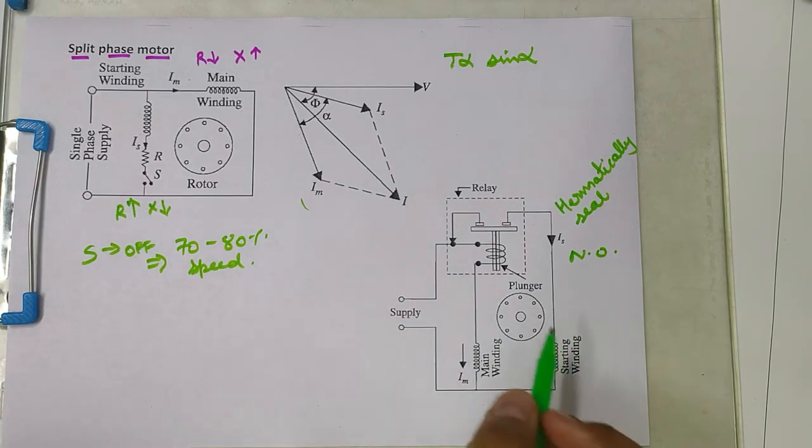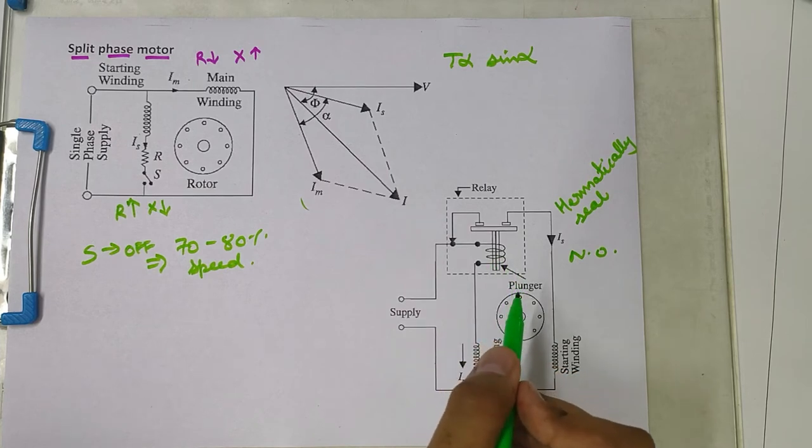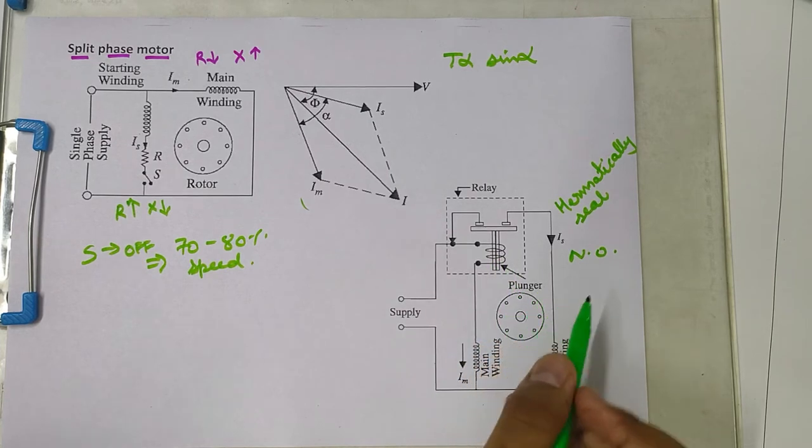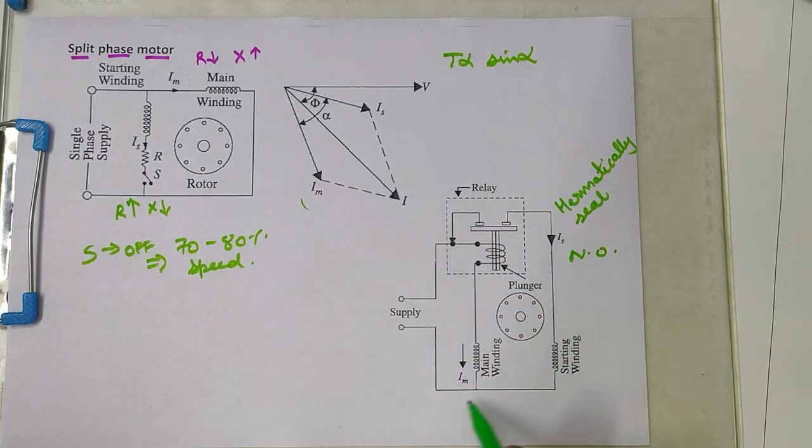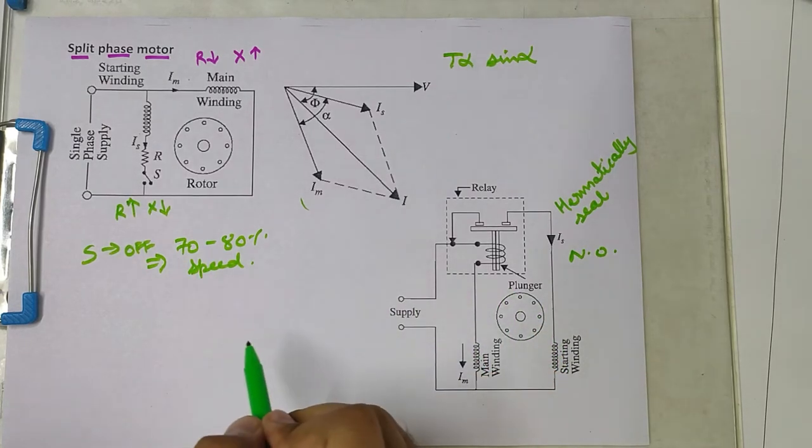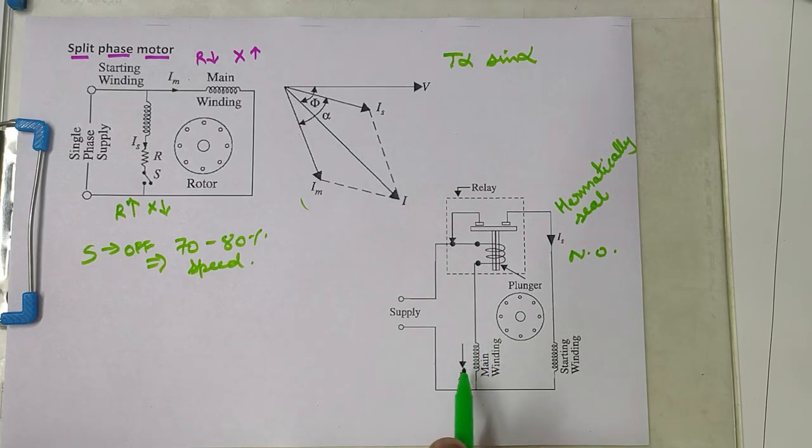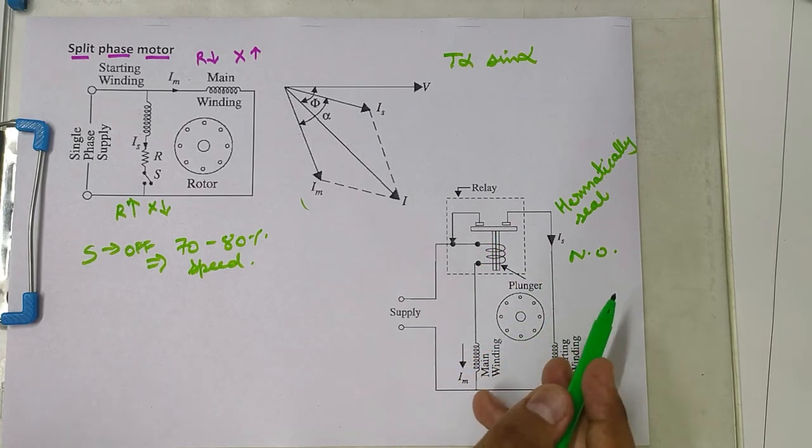During the starting period when the IM, the main winding current, is very large, the relay contacts are closed by the plunger action. This allows IS to flow. As this contact is closed, the starting winding will be connected to the circuit and the motor will start as usual. When the motor reaches 70 to 80% of the speed, IM value will drop and so the current is not enough to keep the contacts closed, and so this will come in normally open position.